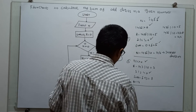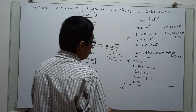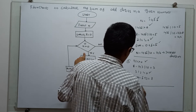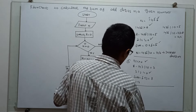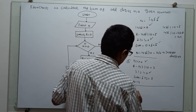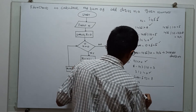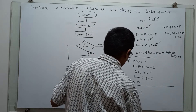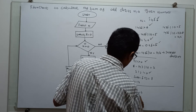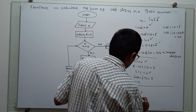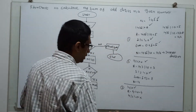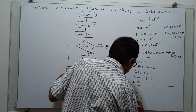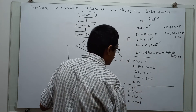Third iteration: 14 greater than 0 is true. R equal to 14 modulo 10, which equals 4. Now 4 modulo 2 equals 0, so not equal to 0 is false. So we directly go to n equal to n divided by 10: 14 divided by 10 using integer division equals 1.